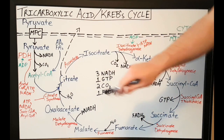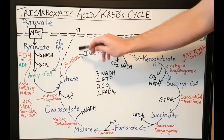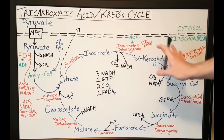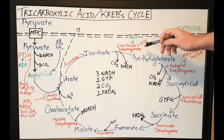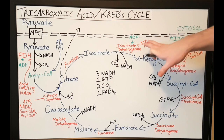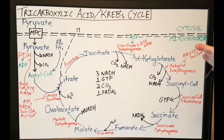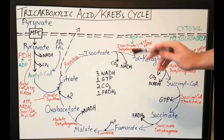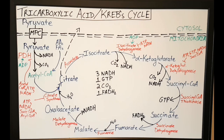Once you get citrate, it'll be converted into isocitrate via the enzyme aconitase. Once you have isocitrate, it will be converted into alpha-ketoglutarate via the enzyme isocitrate dehydrogenase, which decarboxylates and oxidizes isocitrate, producing a CO2 and an NADH. Isocitrate dehydrogenase is negatively regulated by ATP and NADH, and positively regulated by ADP.